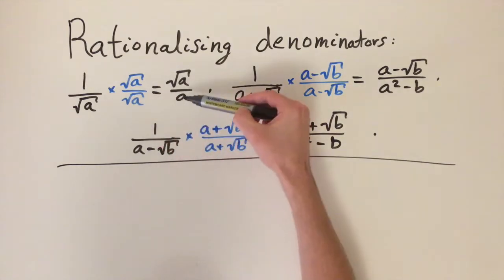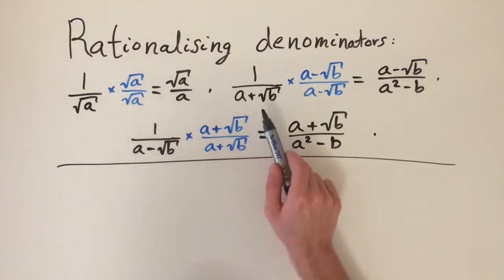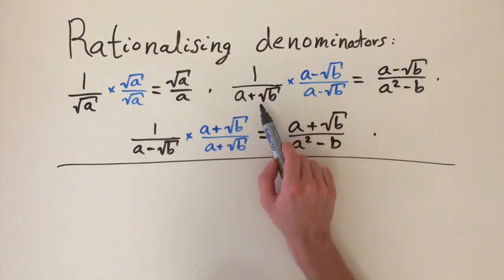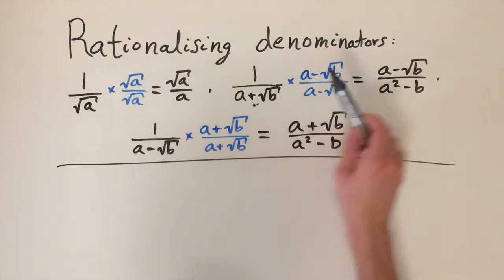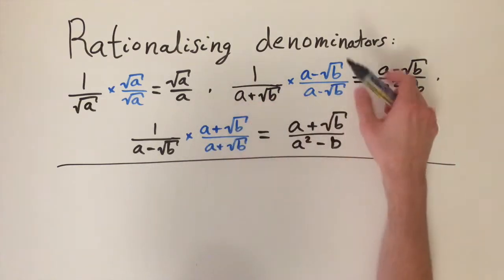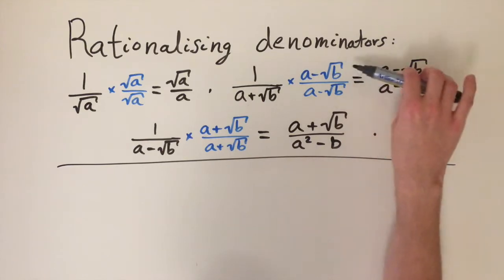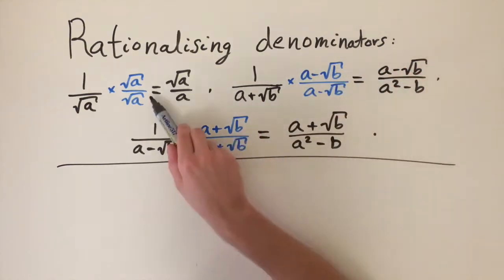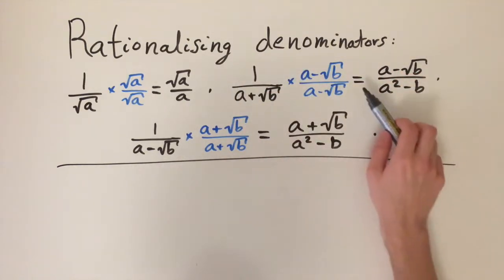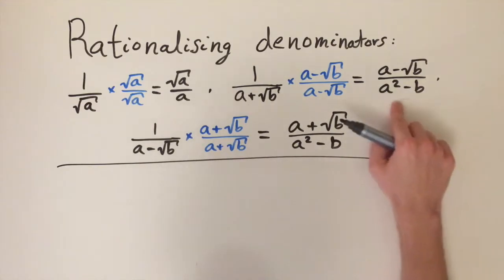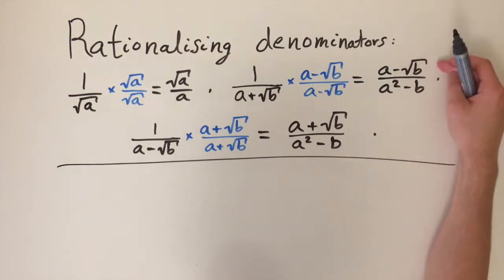We've moved the irrational onto the numerator. Now if we have a fraction with a denominator involving a rational part and an irrational part, what we do is take that number, change the sign — so if it's plus we change it to minus — and multiply top and bottom by that number. So a plus the square root of b multiplied by a minus the square root of b divided by a minus the square root of b. Just as before, these cancel out so we're multiplying by 1. What we end up with is a rational denominator: a squared minus b, and on the numerator we get a minus the square root of b.